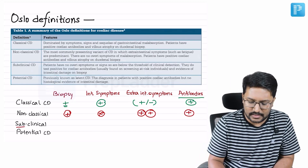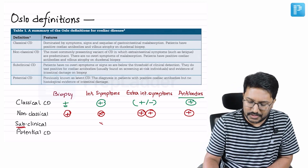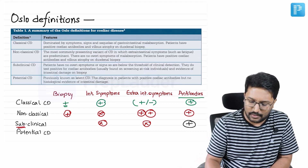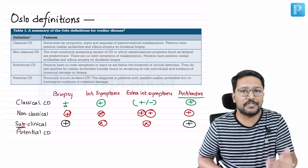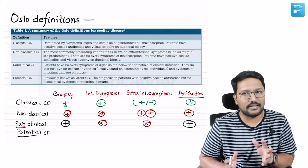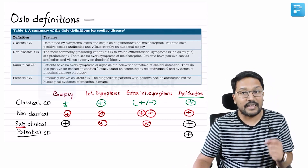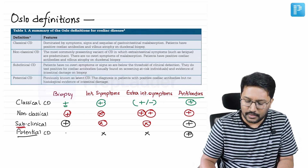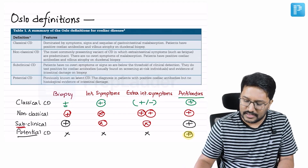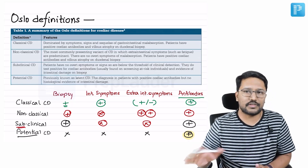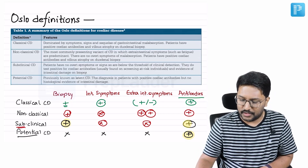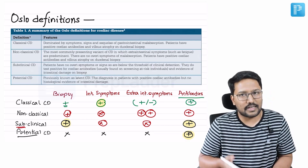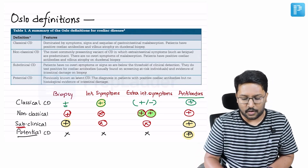Subclinical: as the name says, symptoms are absent — neither intestinal nor extra-intestinal symptoms are present. These patients have antibodies and biopsy features present and will probably progress to develop symptoms in the future. Potential celiac disease: antibodies are present in an asymptomatic individual with negative biopsy. Only serology is positive — no symptoms, no biopsy findings. When biopsy and antibodies are present but no symptoms, that is subclinical. When mainly intestinal symptoms are present, that is classical. When mainly extra-intestinal symptoms are present, that is non-classical.